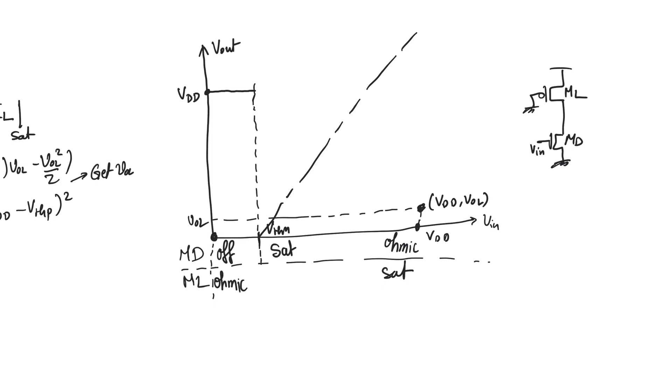And this happens when the curve intersects the line V output equals V input minus V threshold N. Because for the driver, the inequality for saturation is VDS, which is V output, is greater than VGS, which is V input minus V threshold N. So when does the load switch from ohmic to SAT? Because the load starts in ohmic and ends up in SAT. It's never going to be cut off because VGS is minus VDD, so it's always on. But the question is, when does it stop being ohmic and when does it start being saturated?